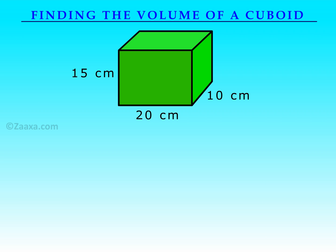Take a look at this solid. Can you guess its volume? Since we know the length, breadth, and height, we can easily find the volume of this solid. Twenty times ten times fifteen is equal to three thousand. The volume of this solid is therefore three thousand cubic centimetres.